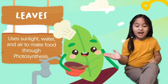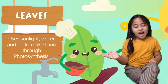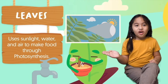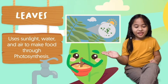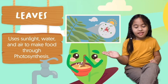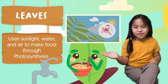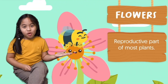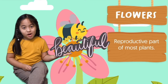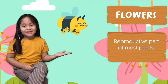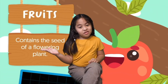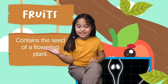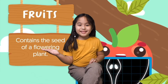Leaves have a green pigment called chlorophyll, which absorbs the light and makes food. The flower is the most beautiful part of the plant. Fruit provides food and seed that makes a new plant.